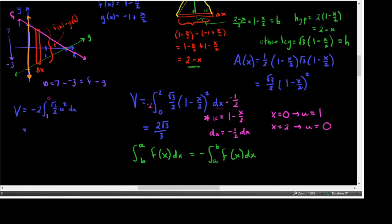Taking √3/2 out and multiplying by −2 gives −√3. The antiderivative of u² is (1/3)u³. Evaluating from 1 to 0: −√3 · [(1/3)(0)³ − (1/3)(1)³] = −√3 · [0 − 1/3] = √3/3. But wait — let me double-check the answer.